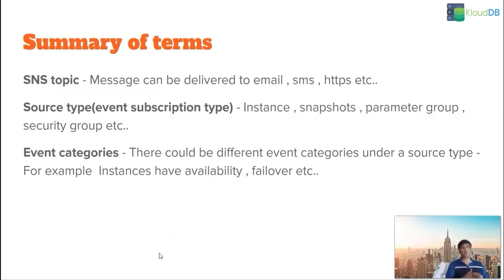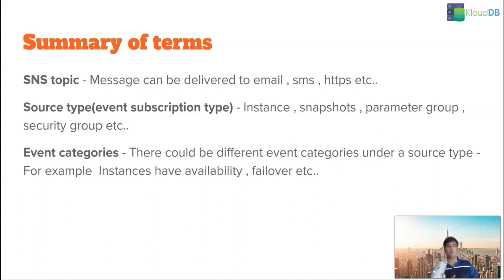Now a final summary of the terms we've learned. We learned what an SNS topic is — messages can be delivered to email, SMS, HTTPS, etc. There can be different event subscription types or source types: instances, snapshots, parameter group, security group, etc. Underneath each source type you can select the event categories you want. For example, the instances category will have availability, failover, etc. These are the main terms you need to learn before you start configuring event subscriptions.